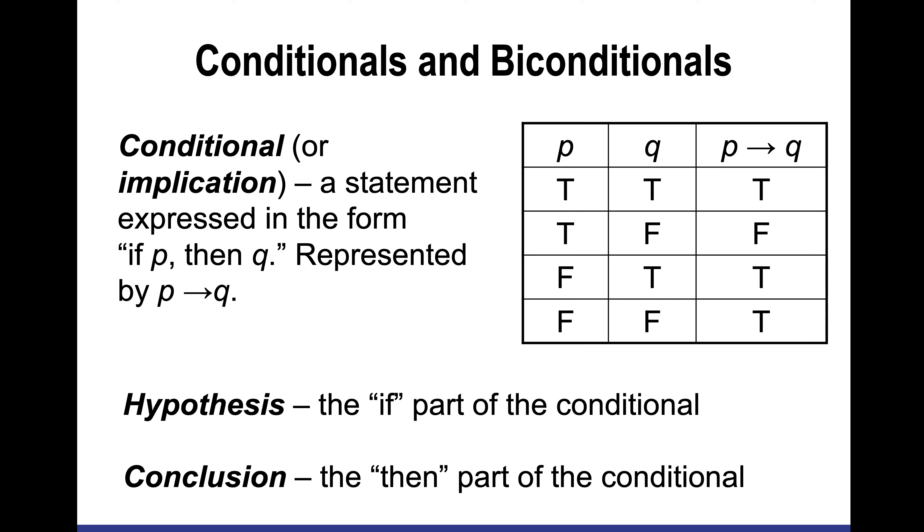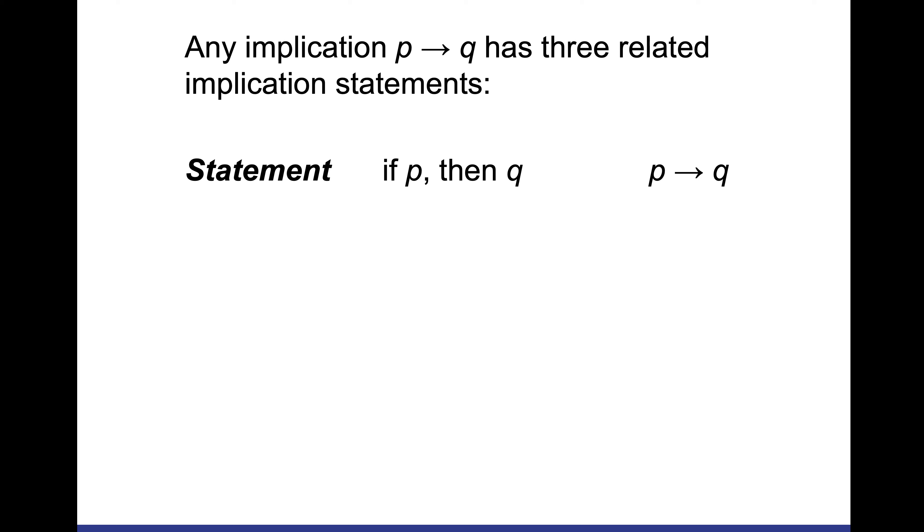Now conditionals and biconditionals are an additional layer. A conditional is if-then, represented with an arrow. A hypothesis is the if part of the conditional, and the conclusion is what's behind the then. If I have if P then Q, my hypothesis is P, my conclusion is Q. If I want the converse, I'm going to switch P and Q, so if Q then P.